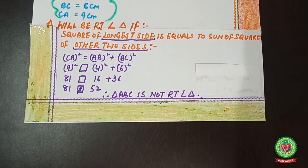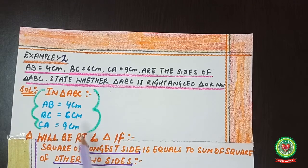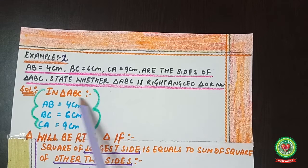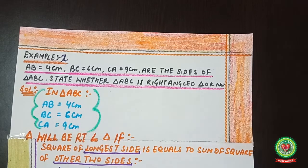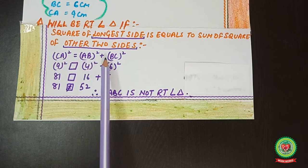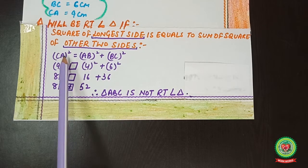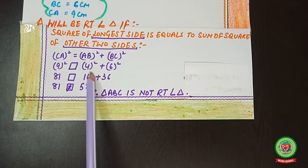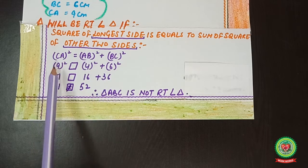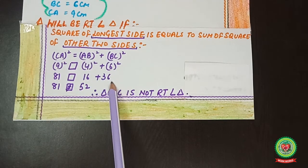The longest side here is 9, which is CA. So we write CA² = AB² + BC². Putting in the values: 9² = 4² + 6². That gives us 81 on the left, and 16 + 36 on the right.